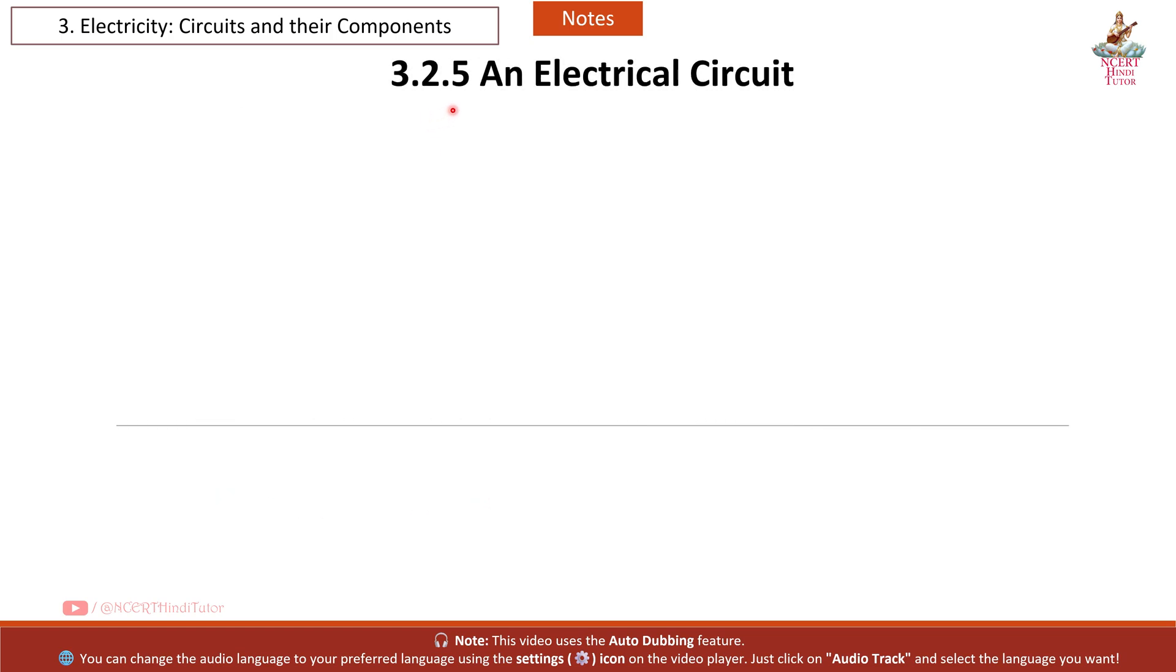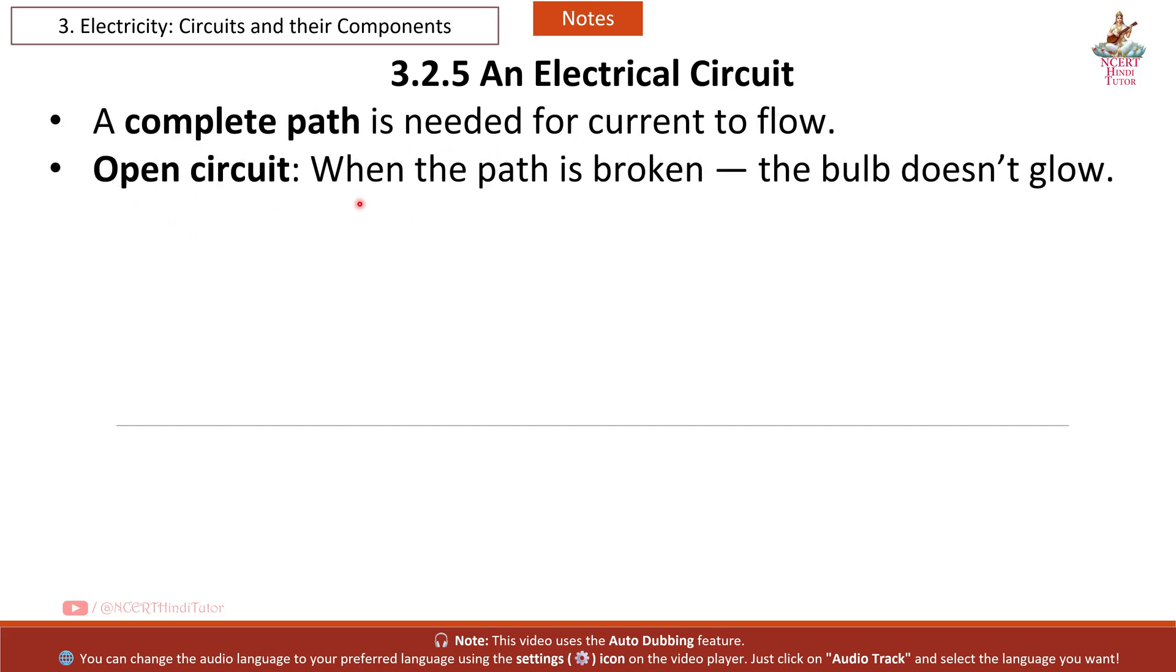3.2.5 An Electrical Circuit. A complete path is needed for current to flow. Open Circuit: when the path is broken, the bulb doesn't glow. Closed Circuit: when the path is complete, the bulb glows.